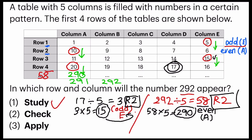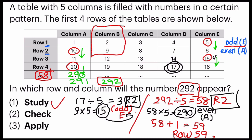But remember, I'm not finding 290. The question one is 292. So 292 is on the next row. So it should be 58 plus 1. It is row 59. So let me write down. It's row 59. And on which column is it? On column B.